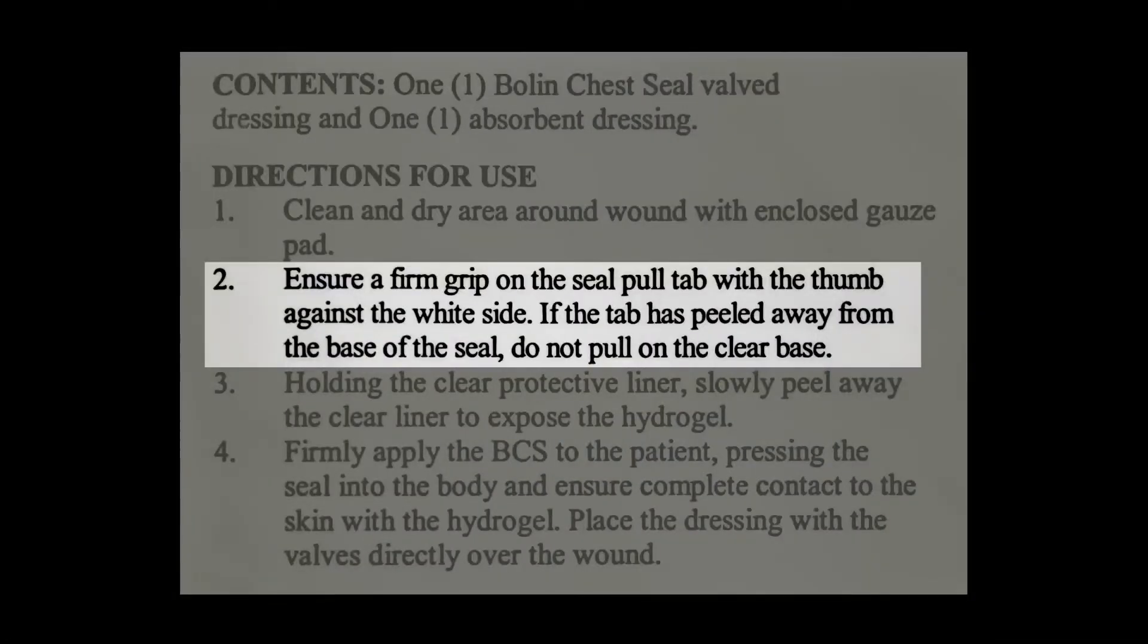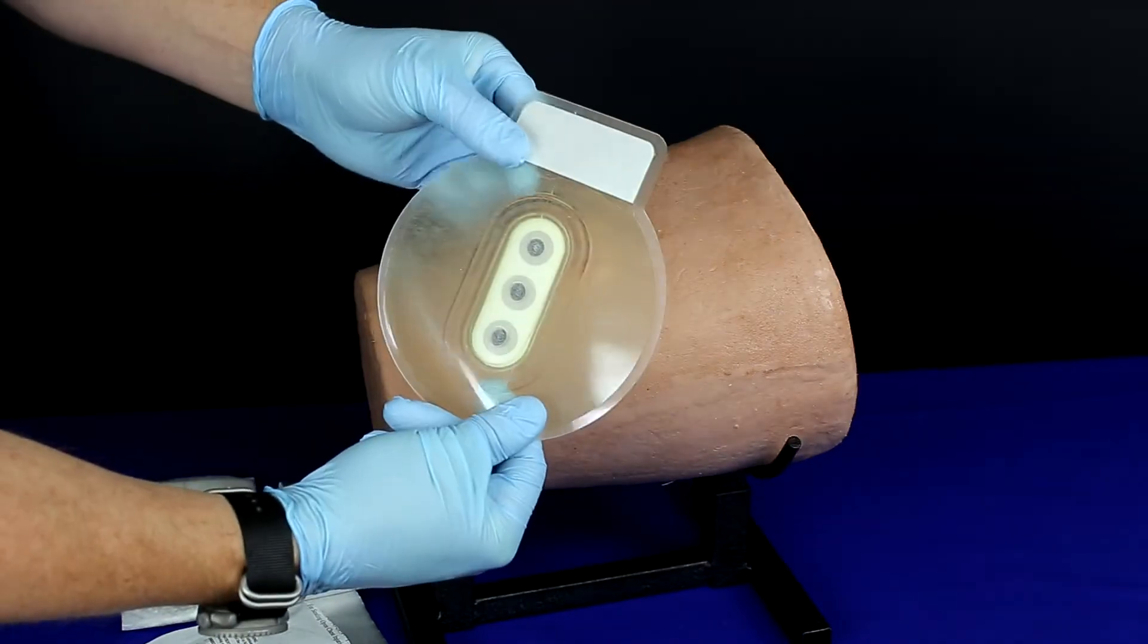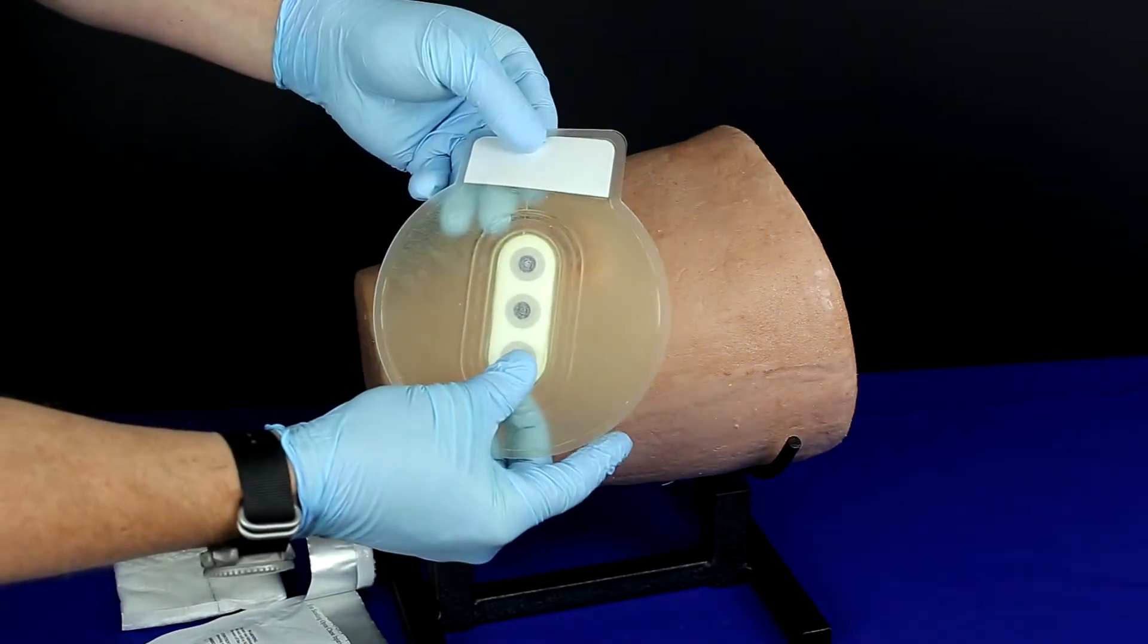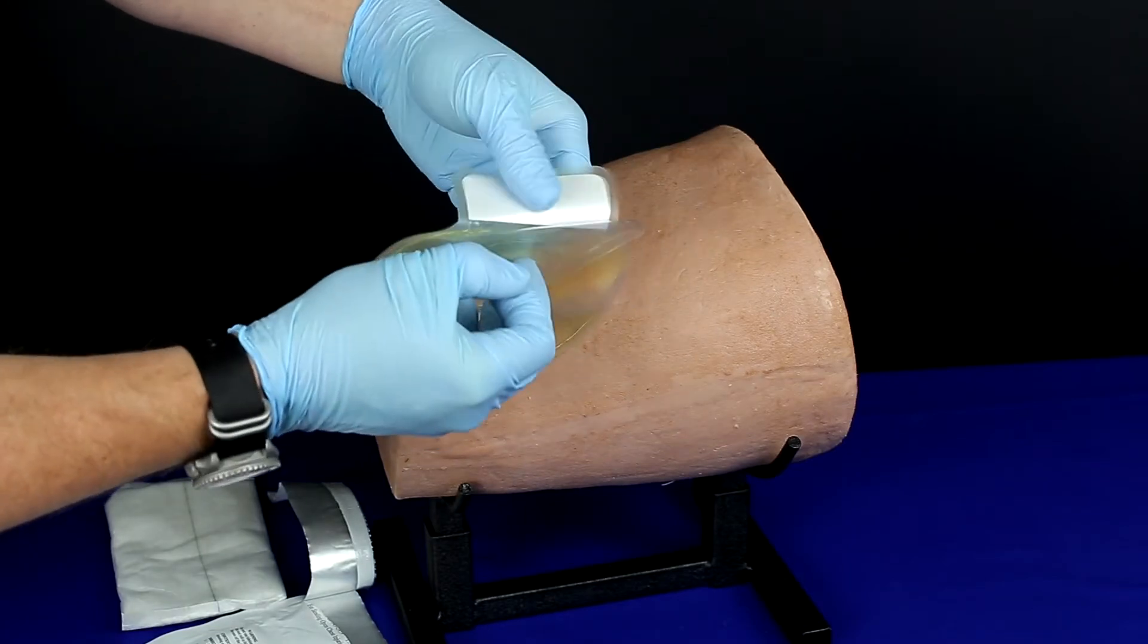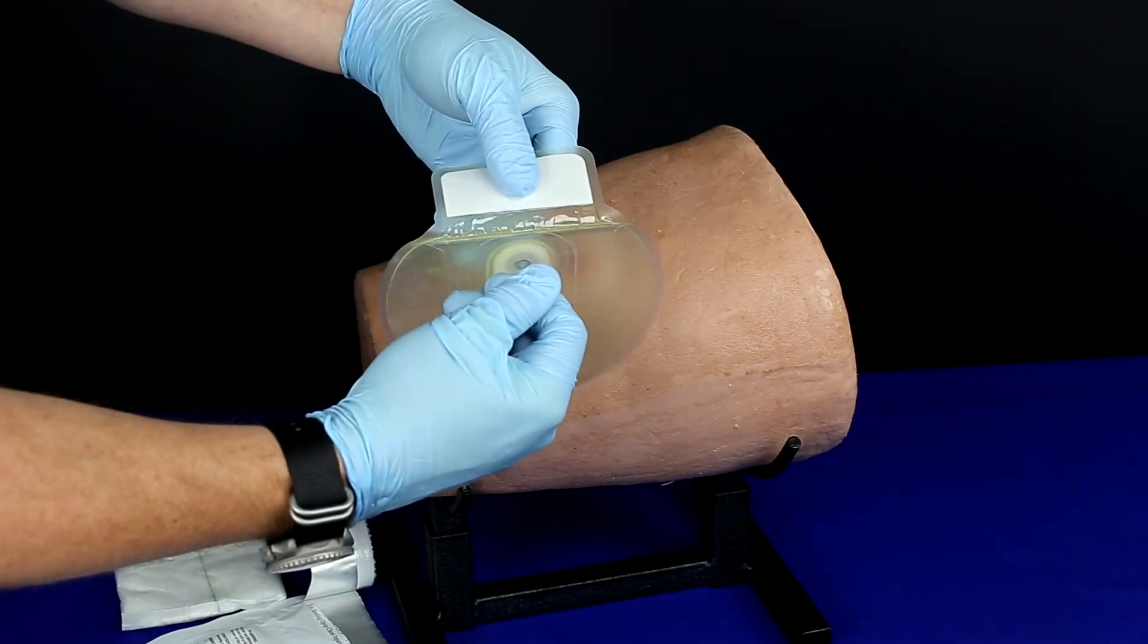Ensure a firm grip on the seal pull tab with the thumb against the white side. If the tab has peeled away from the base of the seal, do not pull on the clear base. The hydrogel-based adhesive used for the Bolin chest seal has substantial adhesive properties and a firm grip is required to separate the seal from the backing material.